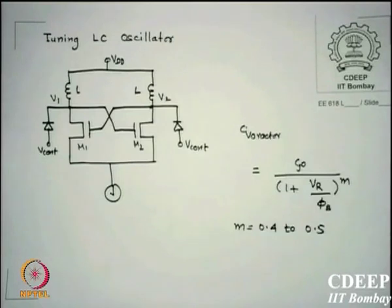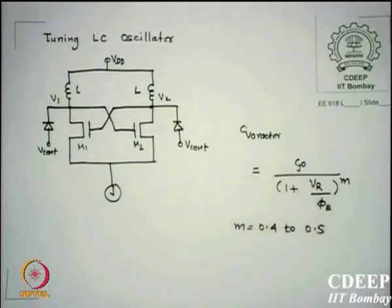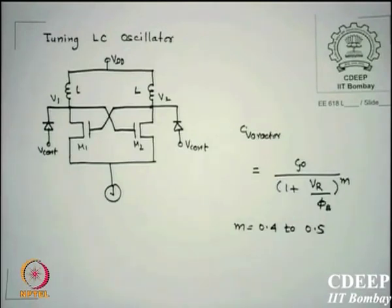The range goes from Cj0 down to a lower capacitance, corresponding to higher frequencies. At Cj0 the oscillator has the lowest frequency, and as voltage increases, frequency increases because capacitance decreases — f = 1/(2π√LC), so as C decreases, frequency increases.